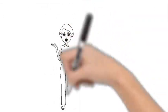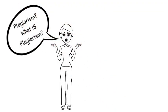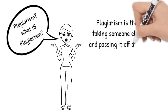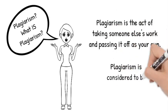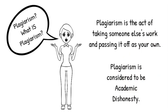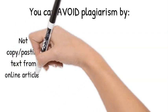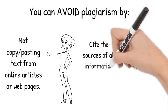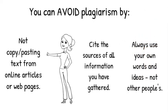You may be asking, what is plagiarism? Plagiarism is the act of taking someone else's work and passing it off as your own. Plagiarism is considered to be academic dishonesty. You can avoid plagiarism by not copy-pasting text from online articles or web pages, citing the sources of all information you have gathered, and always using your own words and ideas.